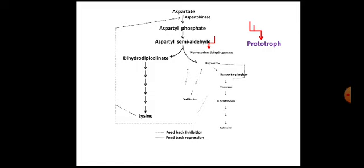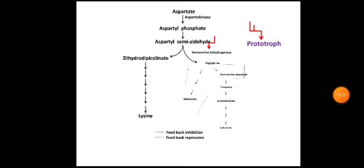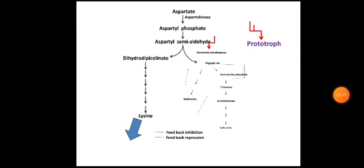Because homoserine dehydrogenase is synthesized at a very low level, threonine is never available in excess, so there will be no inhibition of aspartokinase. Aspartokinase is inhibited only in the presence of both threonine and lysine together. Since threonine is not in excess, this leads to the overproduction of lysine. This is how the revertent mutant becomes an overproducer of lysine.